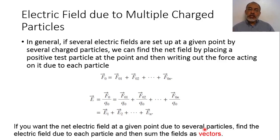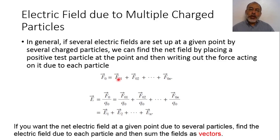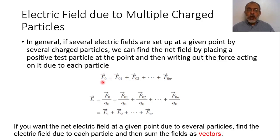If we have multiple charges — Q1, Q2, Q3, up to Qn — and it is required to find the electric field at a specific point, we place a test charge at that point. We calculate the force at the test point due to the first charge and the force due to the second charge. The total force at the test charge is the vector summation of forces from the first, second, third, and all subsequent charges.